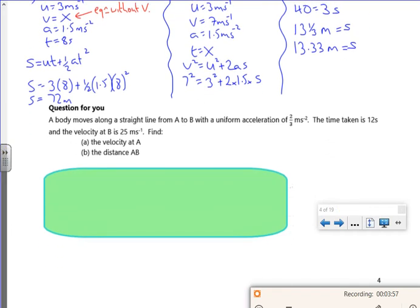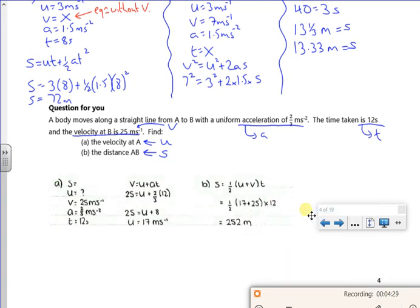Right, so there's a question for you here. So it tells you what the acceleration is. It tells you the time. So I've got acceleration, I've got time, I've got the velocity at B. So that's the V number because that's at the end. And that wants to work out what U is and that wants to work out what S is. So you set it all out, use the two equations, see what you get. So pause it and have a look so you're not just copying it.